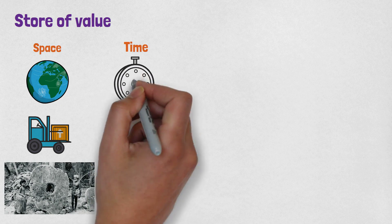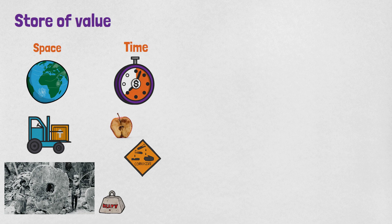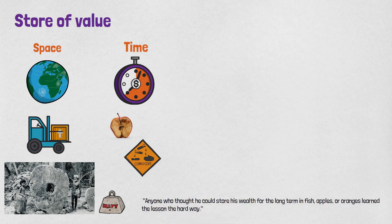Rai stones were not saleable across space because stones were very heavy and difficult to transport. For a good to be saleable across time, it has to be immune to rot, corrosion and other types of deterioration. The author said, anyone who thought he could store his wealth for the long term in fish, apples or oranges, learned the lesson the hard way.